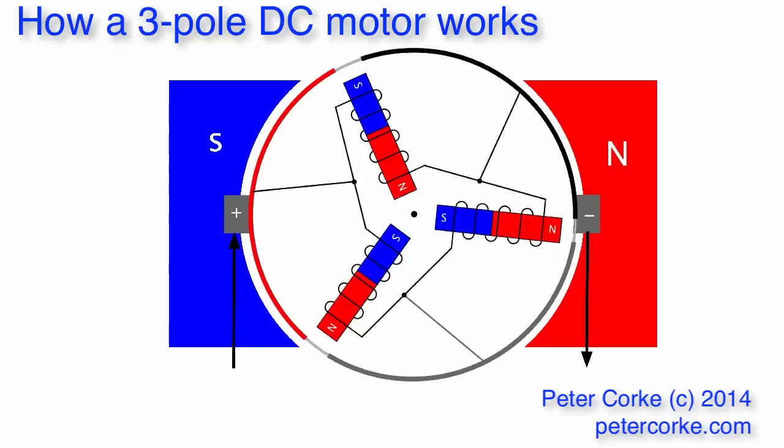So the electromagnet that I mentioned a moment ago that was in a happy position of having its south pole right next to a north pole now has its north pole next to the north pole. So it's going to want to get away from there.